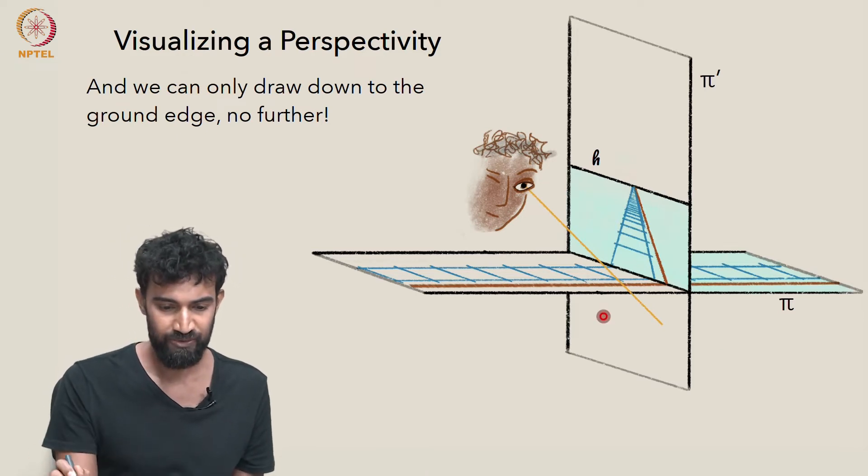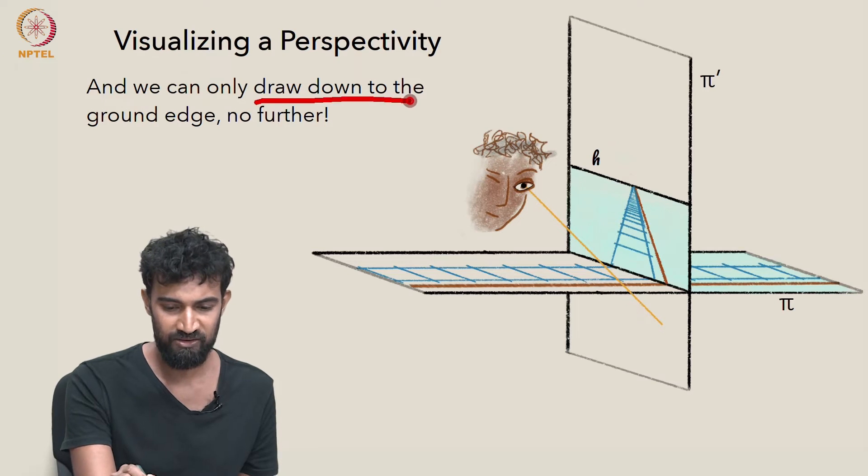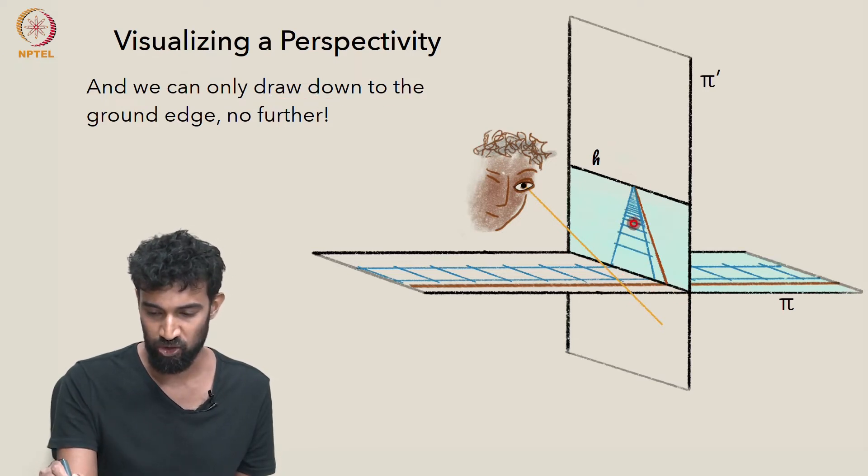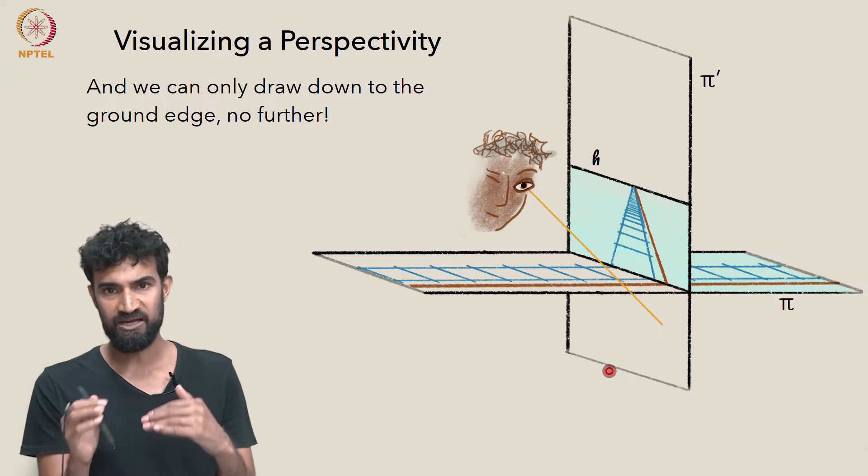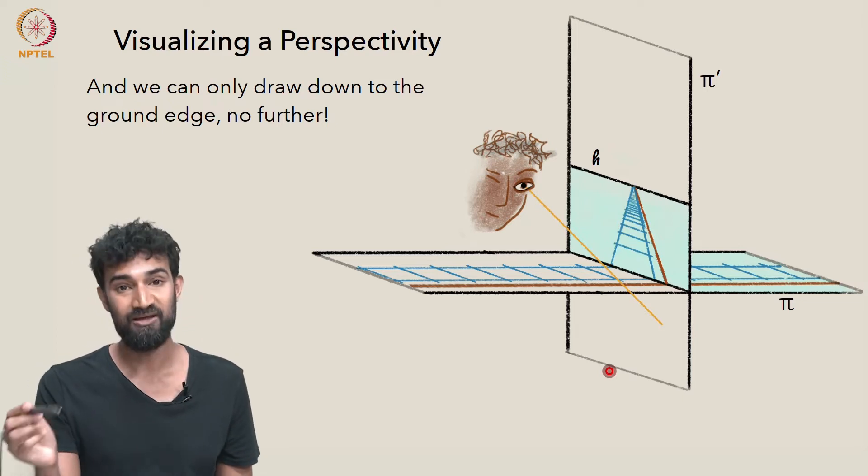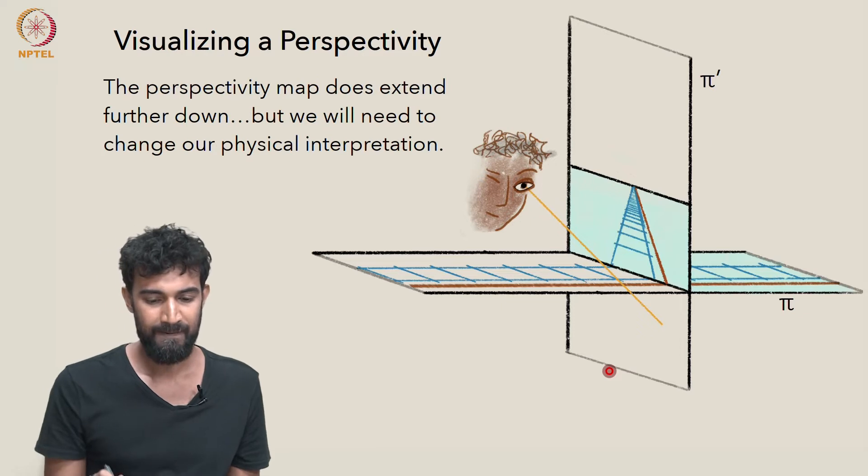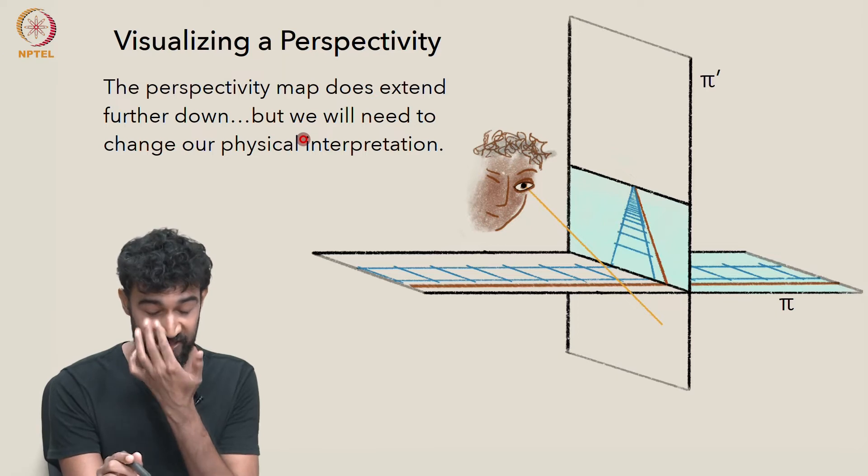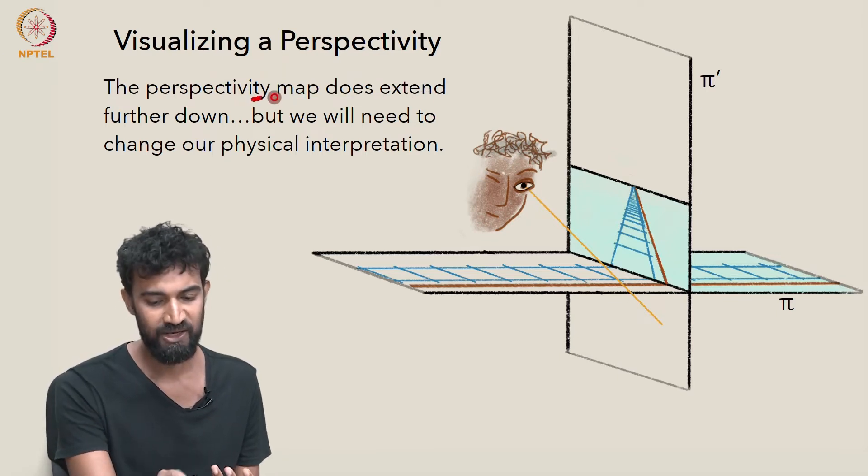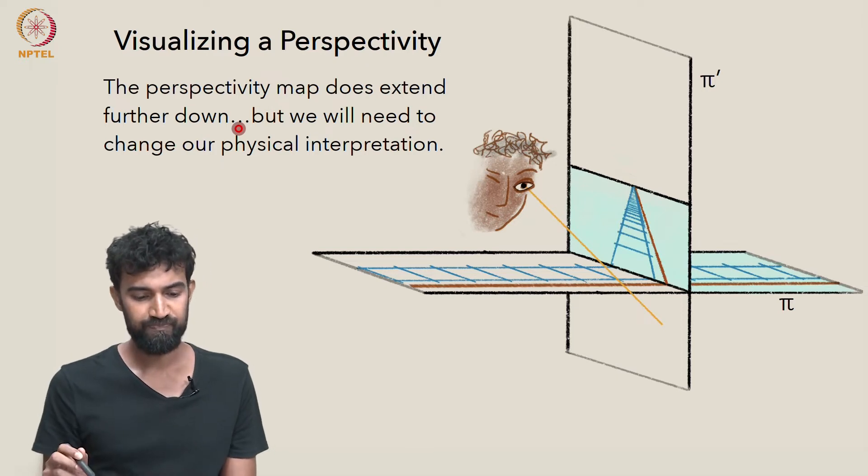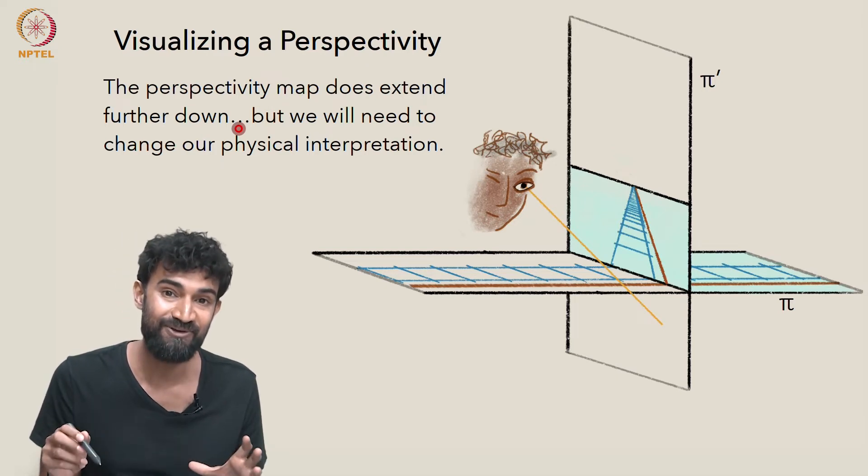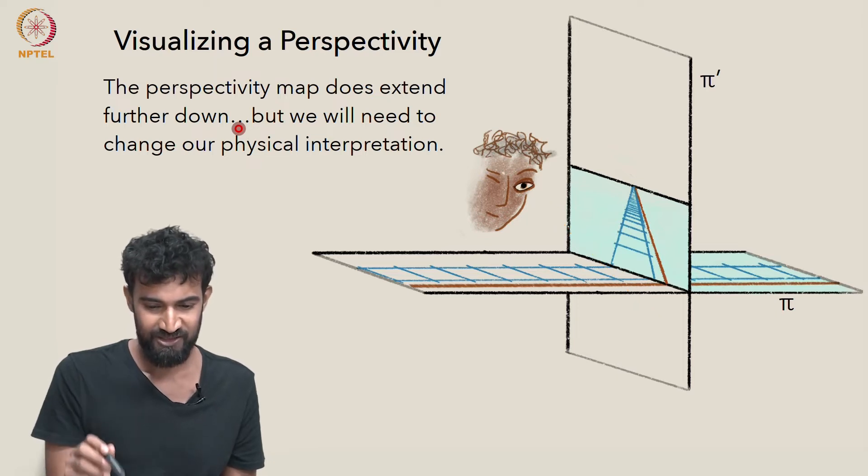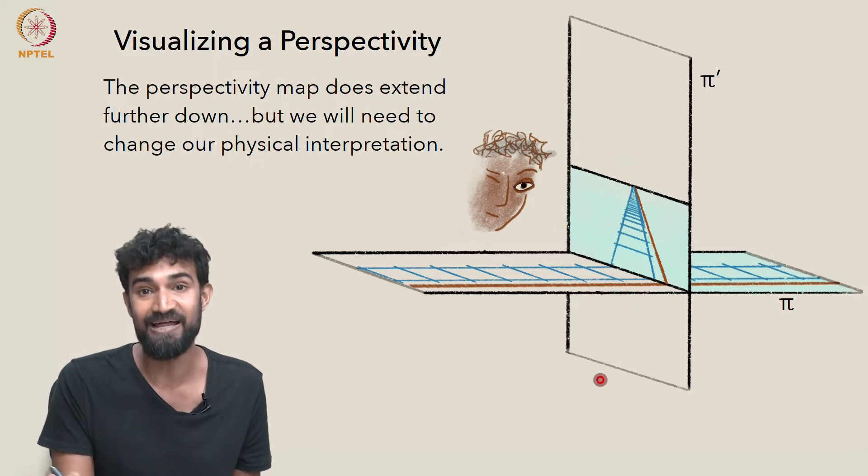And similarly, when we look down, we can't draw down beyond the ground edge. We can draw all the way down to this ground edge where the picture meets the actual railway tracks, but we can't draw beyond that. So that's kind of an upper limit and a bottom limit of our drawing interpretation. So basically, the perspectivity map, if we interpret it as a drawing, it's stuck there. But in fact, the map is defined everywhere, so it does extend further down. But we'll need to change our physical interpretation in order to extend it, or in order to understand that part of the map.